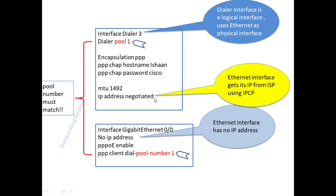The logical interface will get the IP address from the ISP, which is why we write 'IP address negotiated' in the configuration. One of the most important parts of this configuration is that the pool number on the dialer interface and the pool number on the physical interface must match. If they do not match, the configuration will not work.